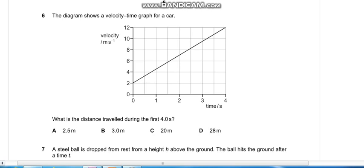Question number six: We need to find the distance traveled during the first four seconds. We're given the velocity-time graph. We just need to find the area of this trapezium. Area of trapezium is half into height, which is 4, and sum of parallel sides, which is 2 plus 12. This makes 2 into 14, which is 28 meters. So D is the appropriate answer.